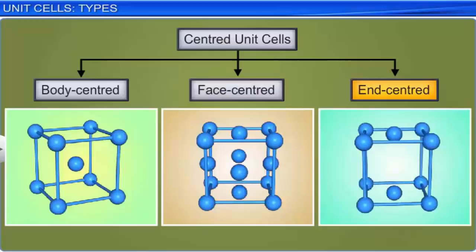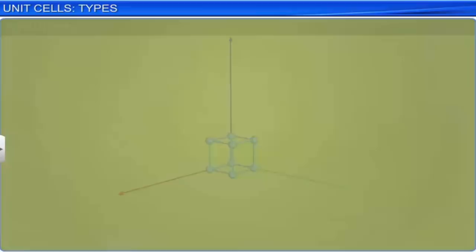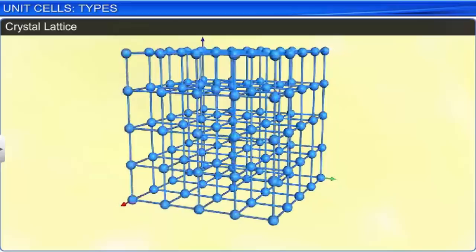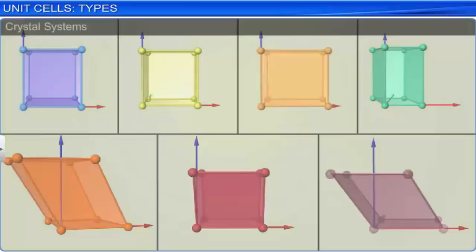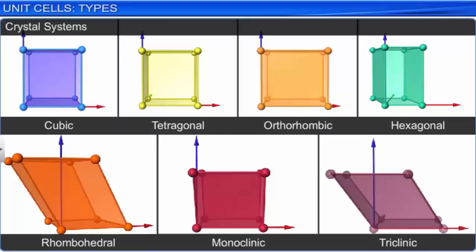A three-dimensional crystal lattice is generated by the translation of lattice parameters A, B, and C. Based on lattice parameters, we have seven crystal systems: cubic, tetragonal, orthorhombic, hexagonal, rhombohedral, monoclinic, and triclinic.